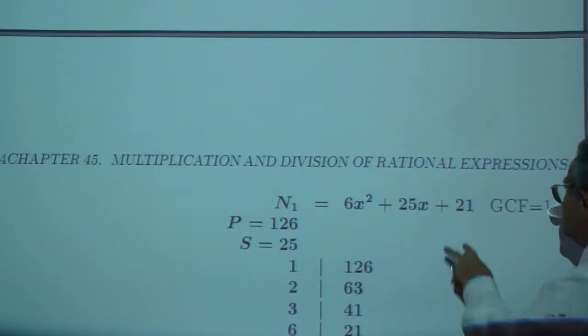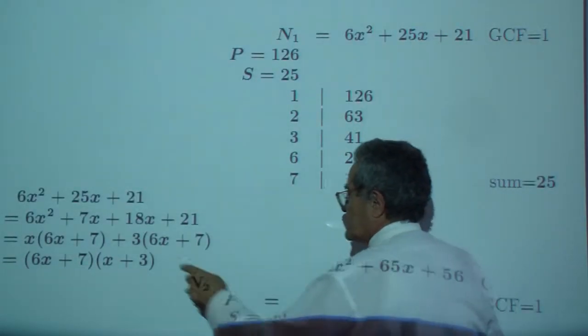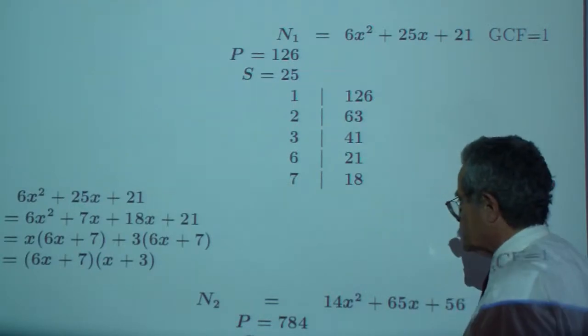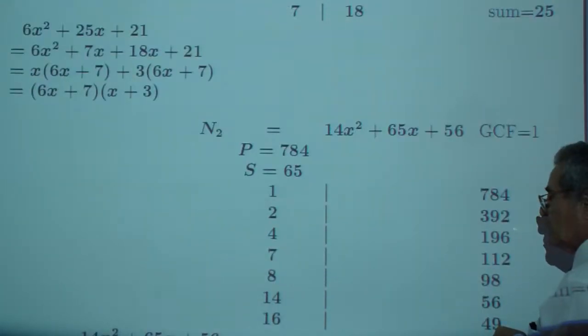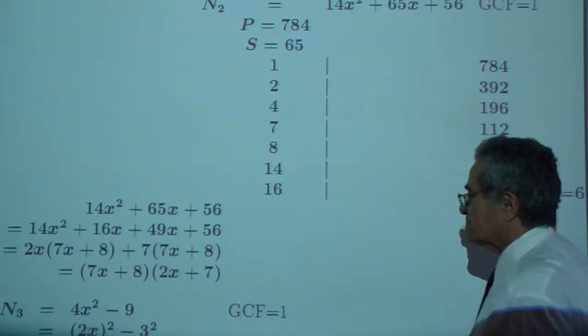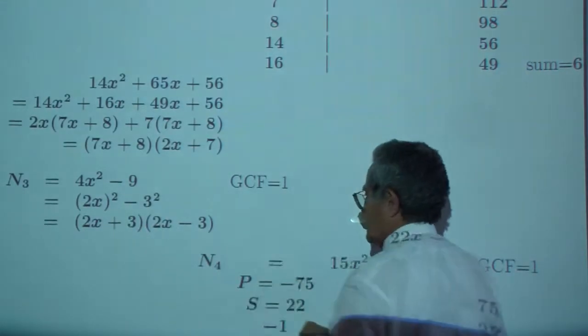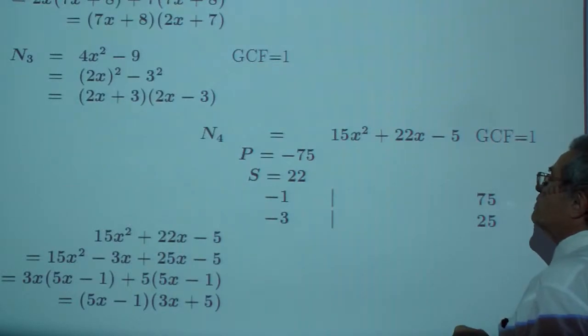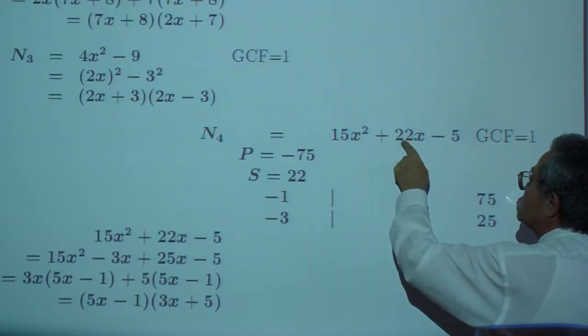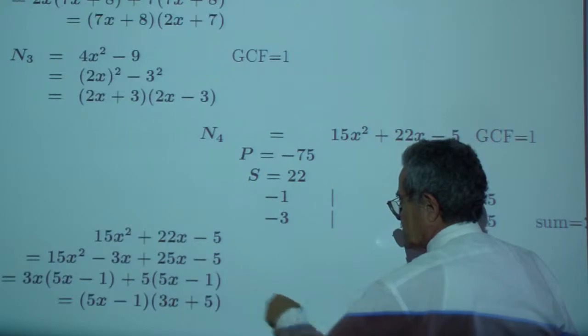So for the first numerator, greatest common factor is 1. Product sum, magic numbers 7 and 18. N sub 1: 6x plus 7, x plus 3. The second numerator, greatest common factor 1, product sum, 7x plus 8, 2x plus 7. The third numerator, N sub 3, the difference of two squares after you have GCF is 1. The fourth numerator, GCF is 1 again. Product sum, 5x minus 1, 3x plus 5.